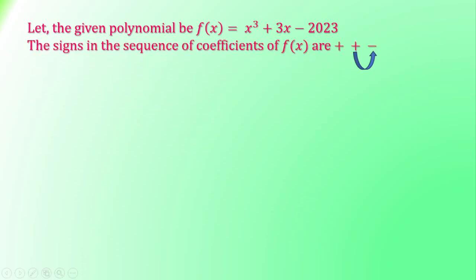Here the given polynomial is f(x) = x³ + 3x - 2023. The signs in the sequence of coefficients of f(x) are: plus, plus, minus.